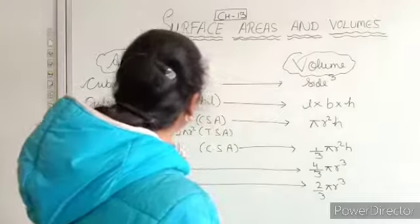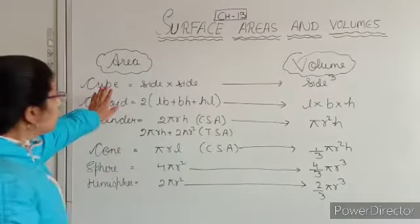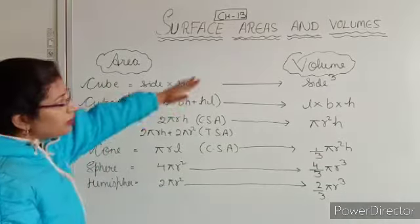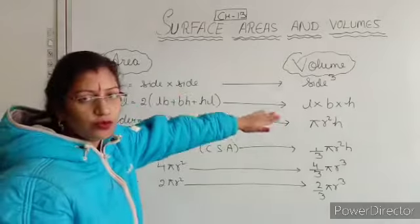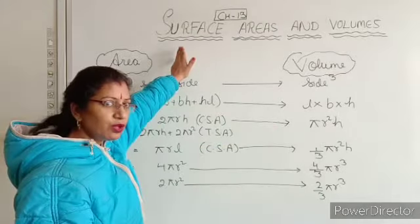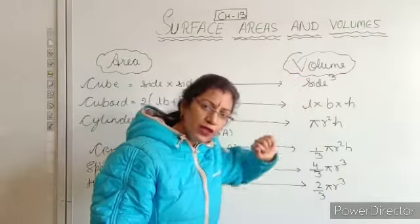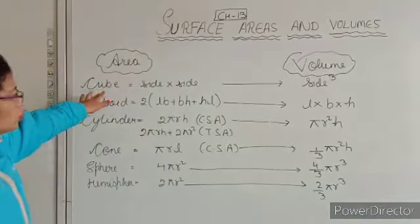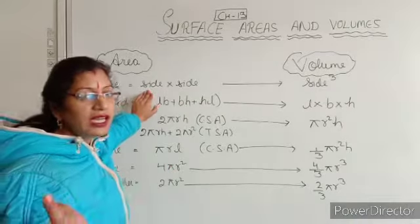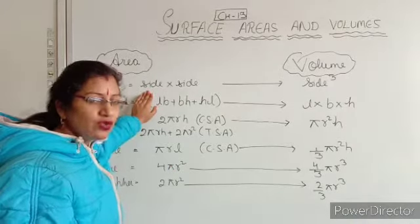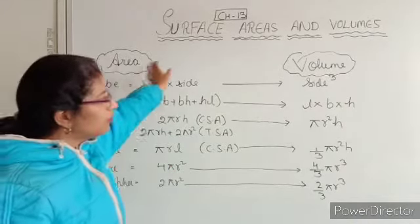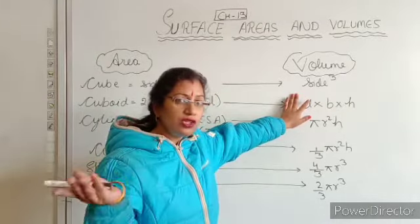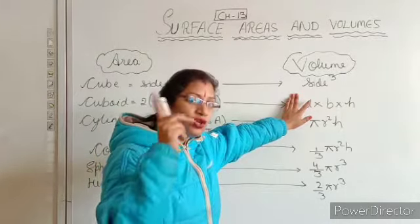So what are the formulas? Area of cube — as everybody knows, side squared, side into side. And volume of cube is side cubed — side into side into side. That is a cube.